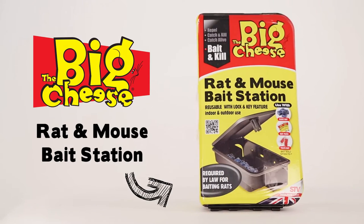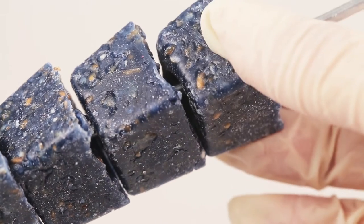We recommend using the Rat and Mouse Bait Station from the Big Cheese. Place the blocks inside a bait station.